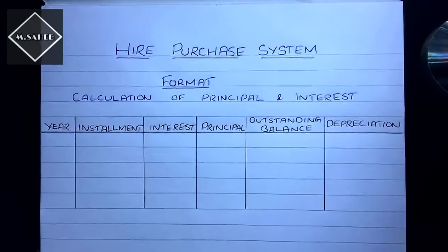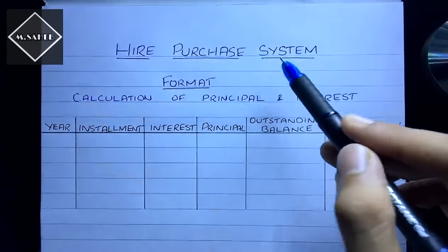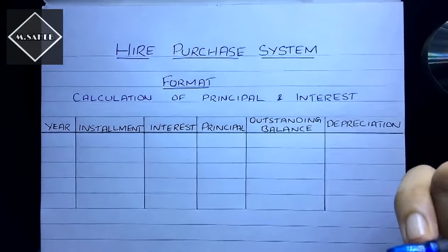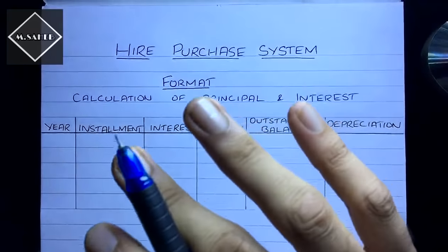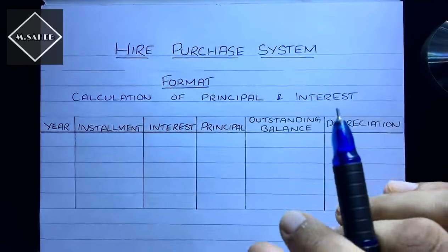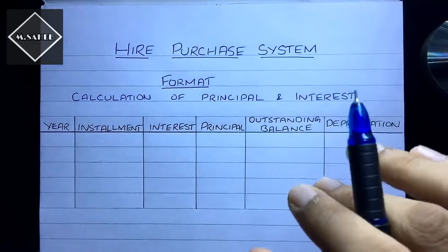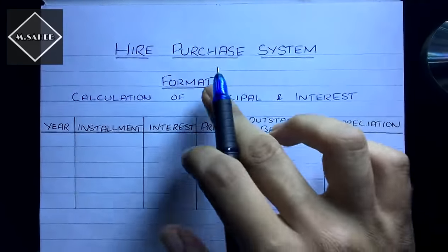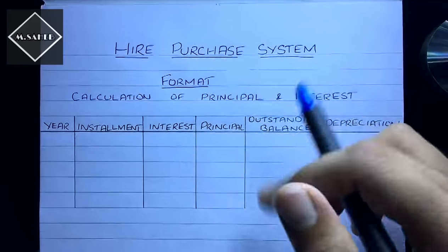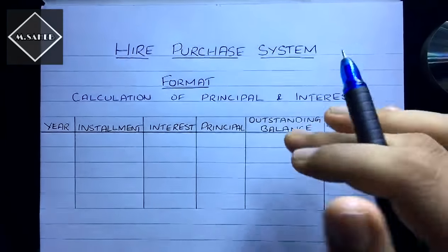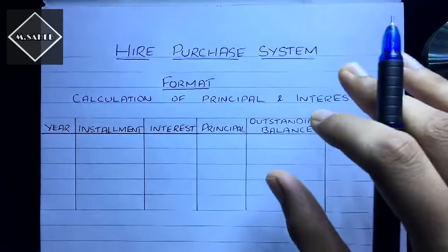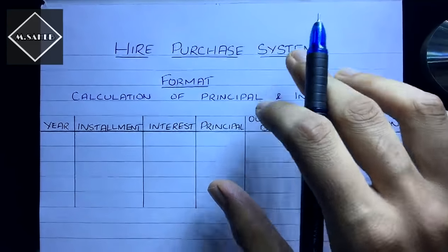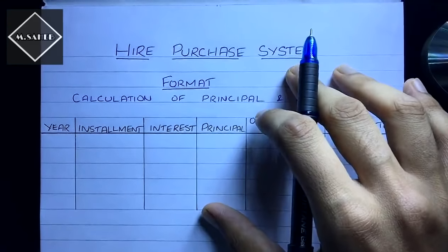Hi everyone, this is the second video of the Hire Purchase System. In the previous video we saw the concept of Hire Purchase System and the journal entries we need to record. In this video we are going to see the format of the working note, the scenarios in which questions may come, and the accounts we need to prepare under Hire Purchase System.